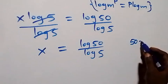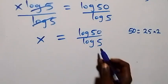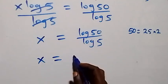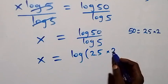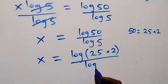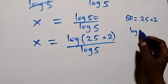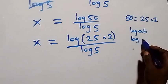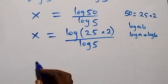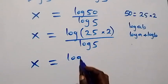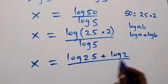From here let's simplify further. Since 50 can be written as 25 times 2, we replace 50 as 25 times 2. So we have x equals to log of 25 times 2, divided by log 5. Applying the law of logarithm, log(a times b) equals log a plus log b, this becomes x equals to log 25 plus log 2, all over log 5.